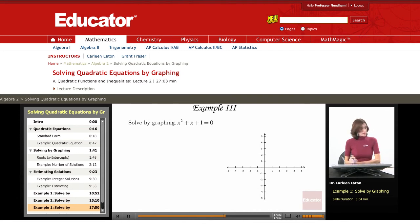In this example, we're asked to solve by graphing x squared plus x plus 1 equals 0. The corresponding function is x squared plus x plus 1.